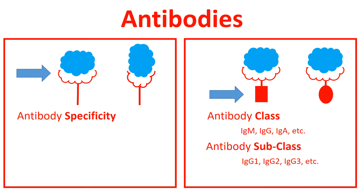Subclasses provide further information. For instance, an antibody can be IgG1, IgG2, IgG3, or IgG4.